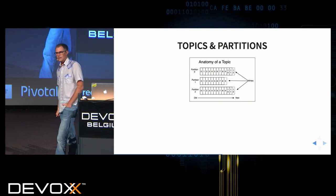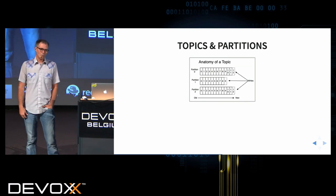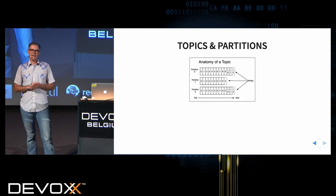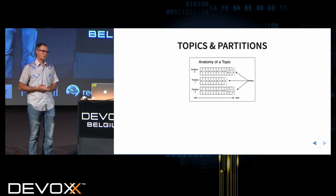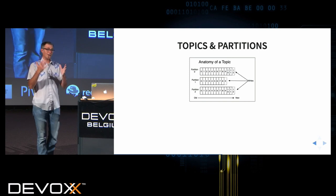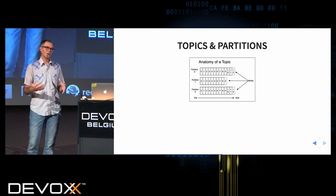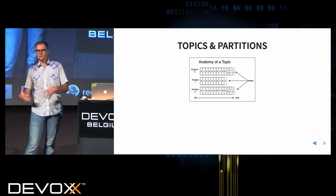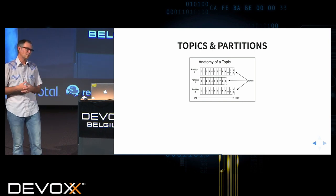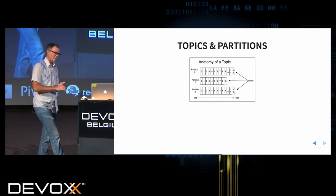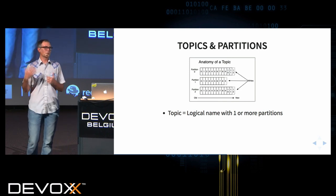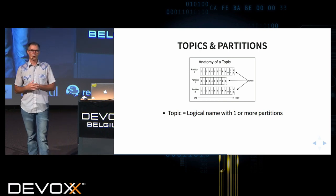Now it starts to get a bit more complex. We've got our records, our producers and consumers — that's pretty typical for a messaging system. Kafka also has topics, which is also a very standard messaging system concept. You can send messages to a topic and subscribe to a topic. But a topic is just a logical name for one or more partitions.